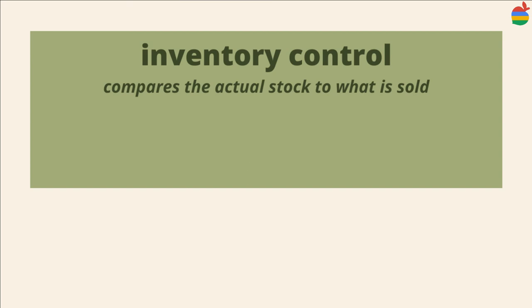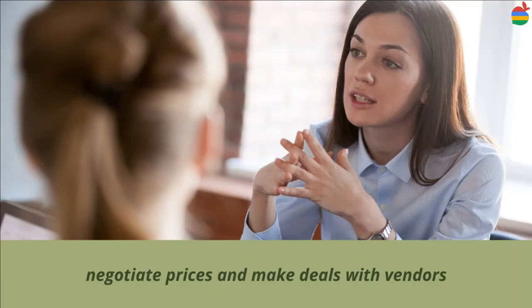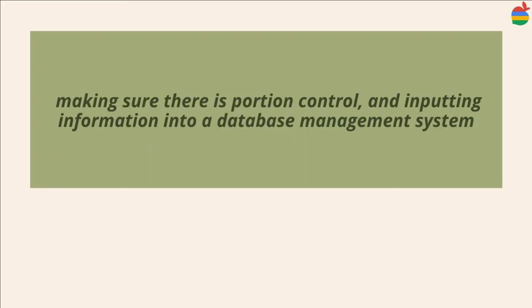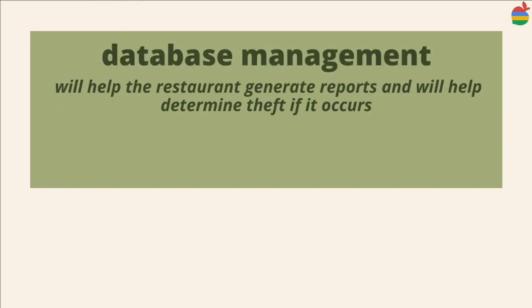In summary, food and beverage inventory control involves comparing the actual stock to what is sold. It is essential to negotiate prices and make deals with vendors to get the best possible prices and stay competitive. Take control of inventory details by doing regular checks on food and beverages, making sure there is portion control, and inputting information into a database management system. Using a database properly will help the restaurant generate reports and determine what happened and when.